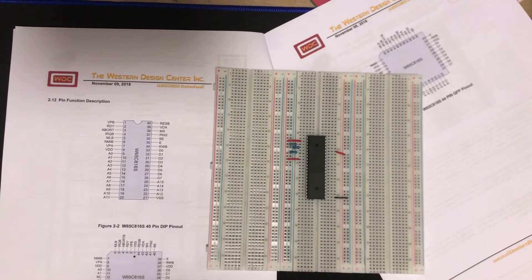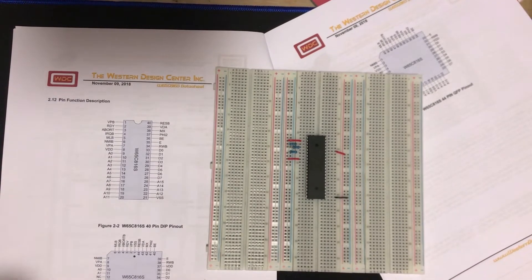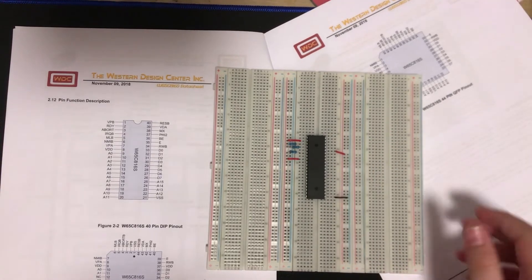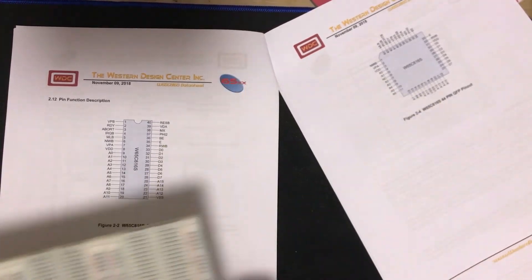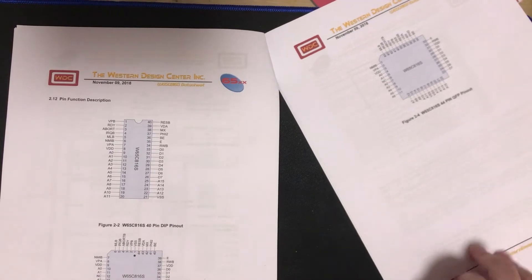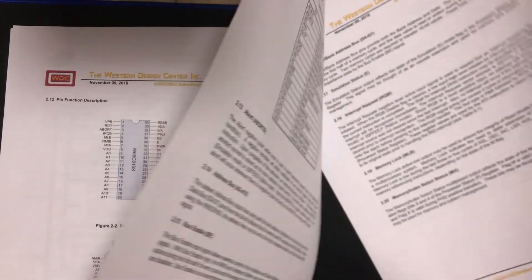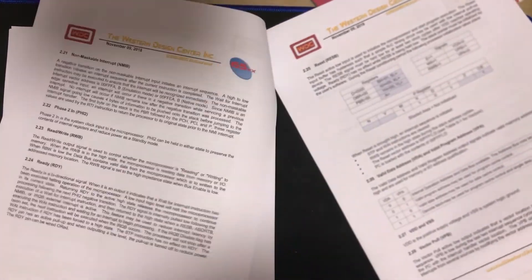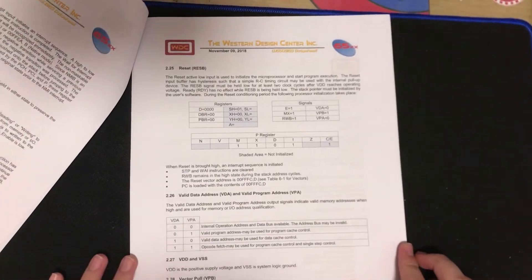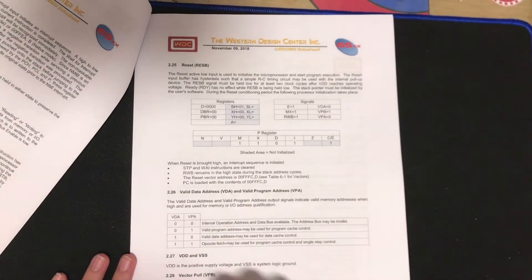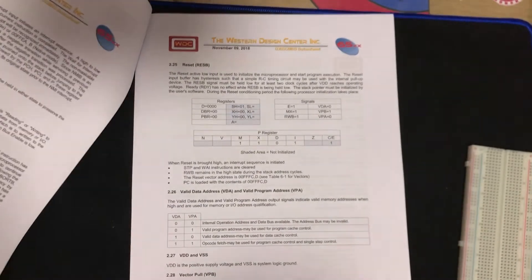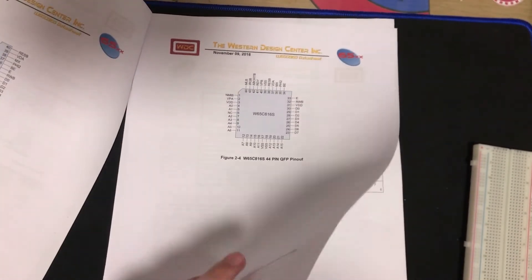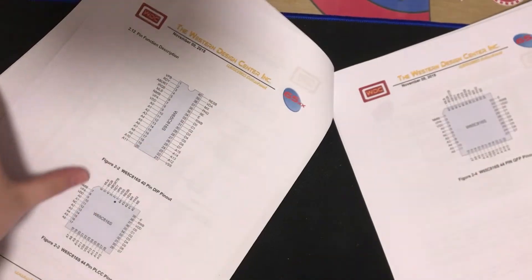Next pin is VDA. This is the data address pin. This is only signaled when the data bus is available. Actually, we can find a more detailed table of this on another page of the data sheet, which is right here. Valid data address and valid program address. These are what this means, and we will refer to that later.